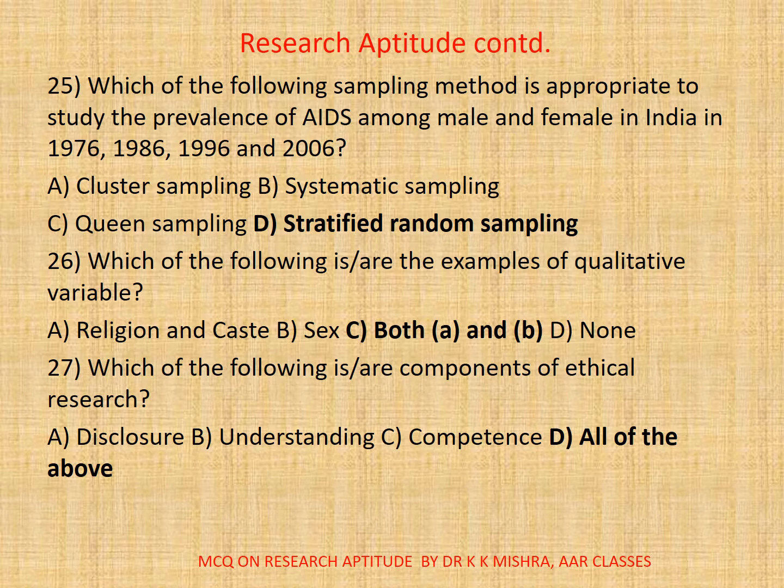Question twenty-seven: Which of the following are components of ethical research? A: Disclosure. B: Understanding. C: Competence. D: All. The correct option is D: All.